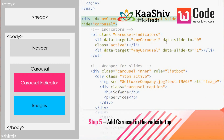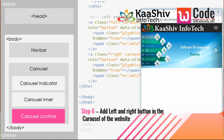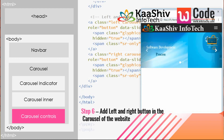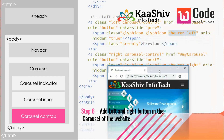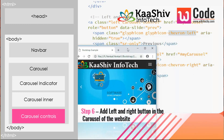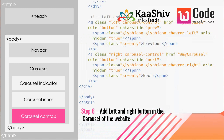Now I'm adding carousel controls — a left carousel control and a right carousel control. Each is a button with a Bootstrap glyph icon: glyphicon-chevron-left for the left control and glyphicon-chevron-right for the right control. The left button shows 'Previous' and the right shows 'Next'. Clicking these buttons scrolls through the images.